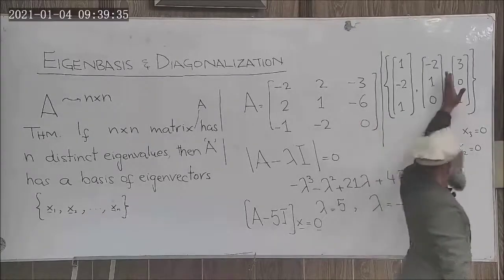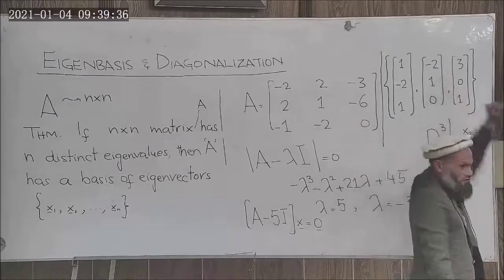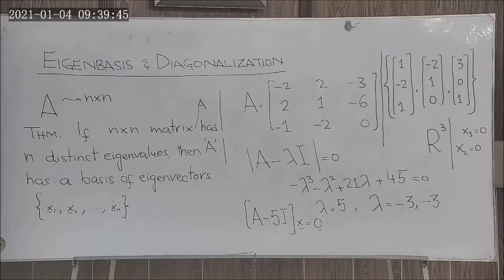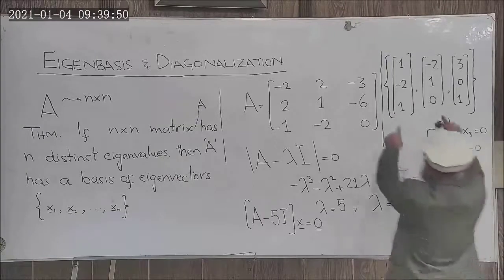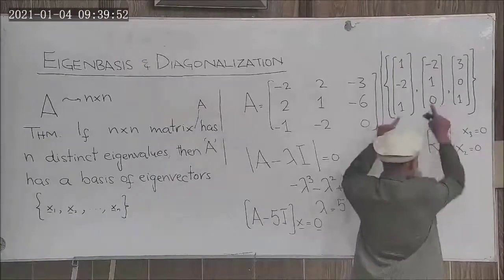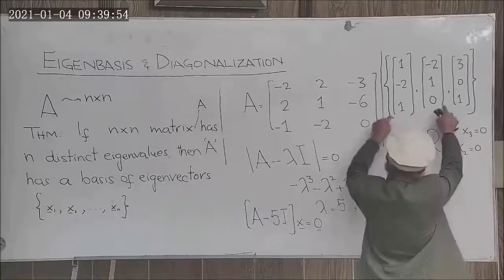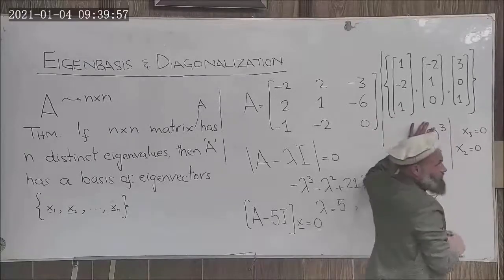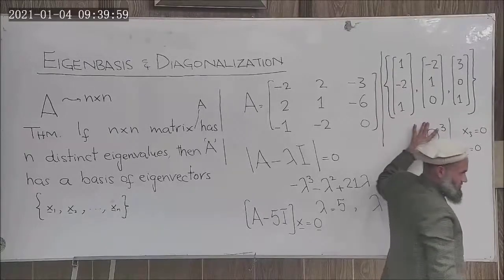The question is: if corresponding to this matrix we had only two eigenvectors, would those eigenvectors span R^3? No. If we had only two eigenvectors, they do not span R^3, so they would not form a basis for R^3, and therefore that would not be an eigenbasis.